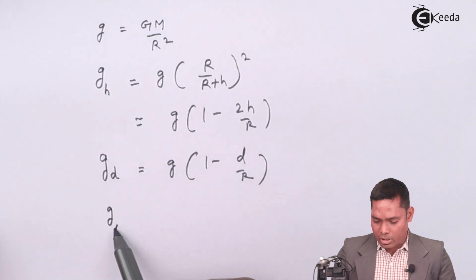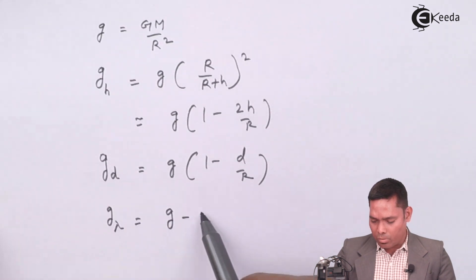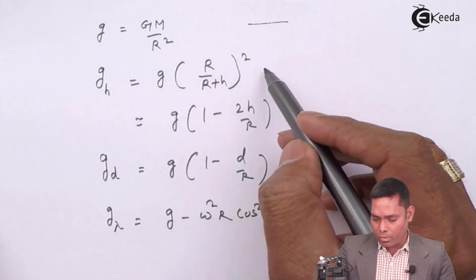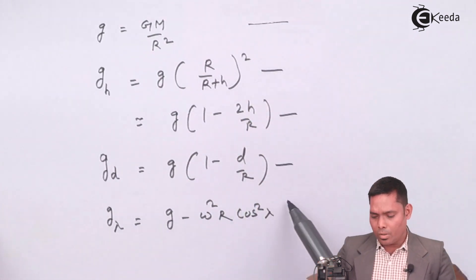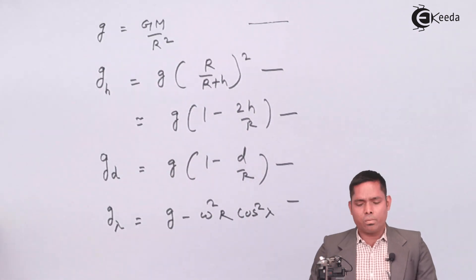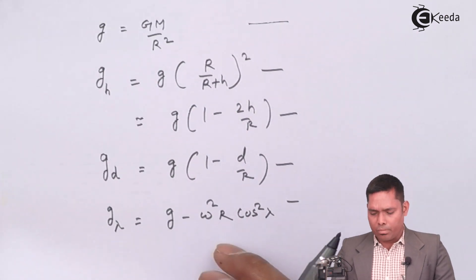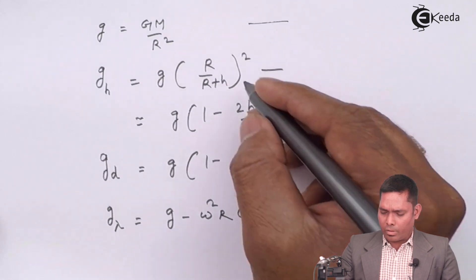g at certain latitude, we have written g minus omega square R cos square lambda. These are the formulae we have used so far. And based on this, we will solve some numericals.